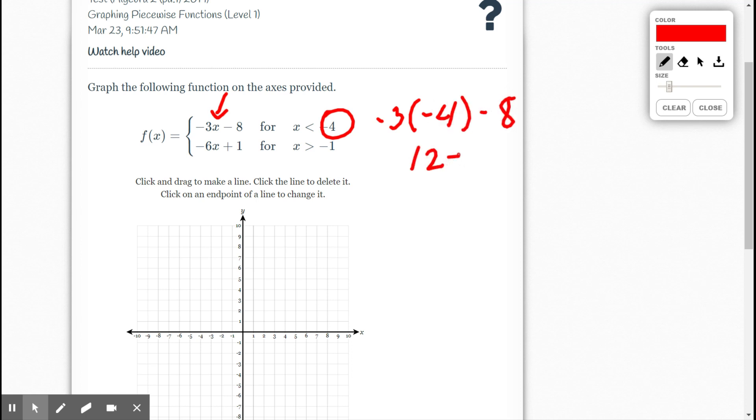So 12 minus 8 is 4. So when x is negative 4, y is 4, or f of x is 4. So negative 4, 4, that's where it starts.